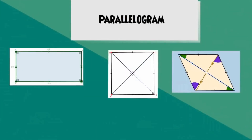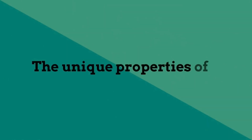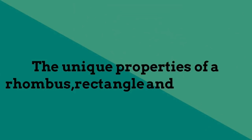They also are all parallelograms, which means they have opposite sides that are parallel. Let's go ahead and look at some of the unique properties of a rhombus, rectangle, and square.